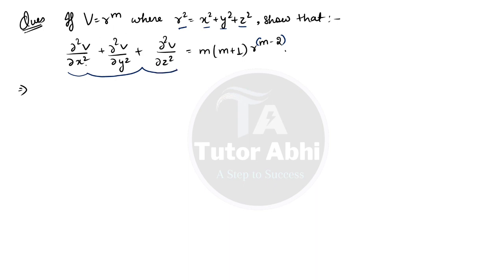We will work on the LHS side and prove that its value equals the RHS. We need to partially differentiate v with respect to x, y, and z.